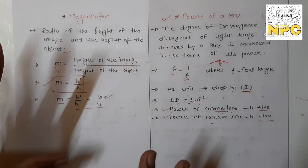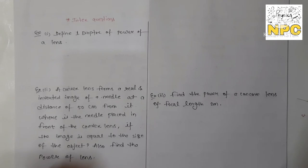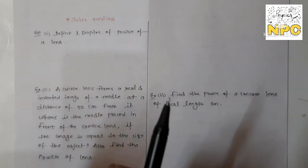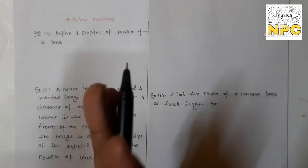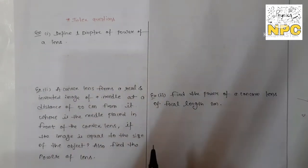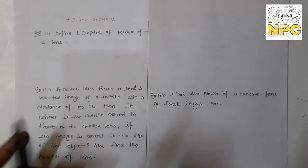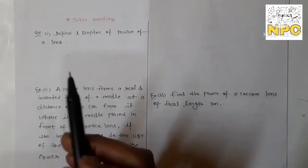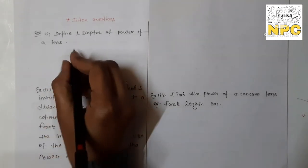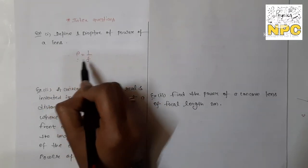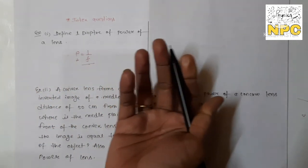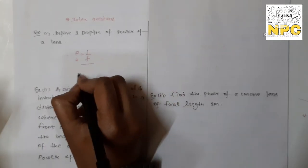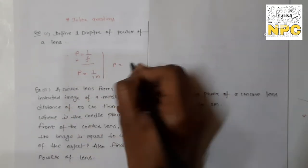Now we will focus on some in-text questions. Question 1: Define one diopter of power of a lens. You have just studied that the SI unit of power of lens is the diopter. One diopter is the power of a lens whose focal length is one meter. Since P = 1/f, if you put f = 1 meter, then P = 1 diopter.